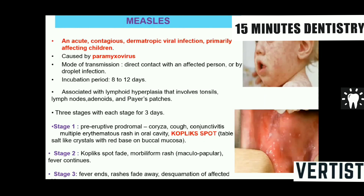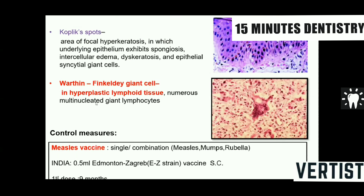The viral exanthematous disease measles is seen in children. It has a cutaneous rash on the skin, and in the oral cavity, white spots called Koplik's spots appear as table-salt-like crystals on an erythematous base. Histopathologically, the hyperplastic lymphoid tissue shows Warthin-Finkeldey giant cells, which are characteristic of measles.